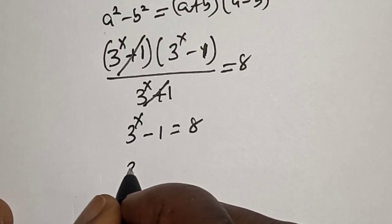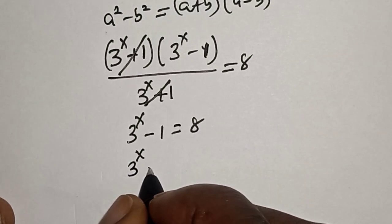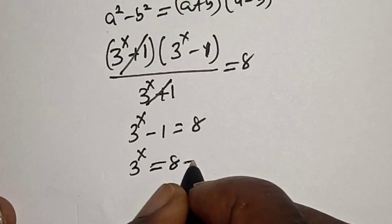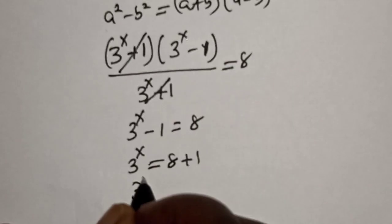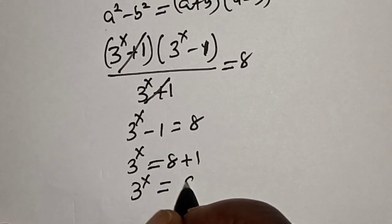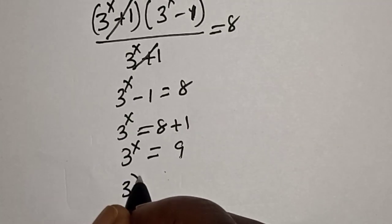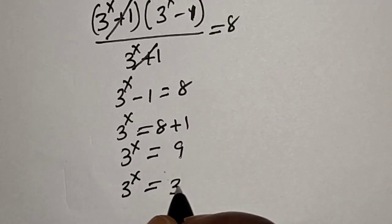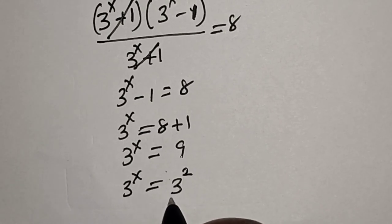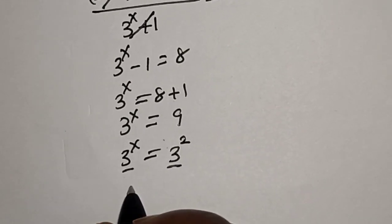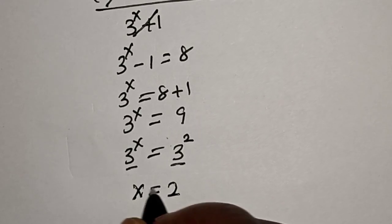Now, 3 raised to power x is equal to 8 plus 1. So 3 raised to power x is equal to 9, which is equal to 3 raised to power 2. Since the bases are equal, therefore x is equal to 2. That is our final answer.